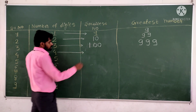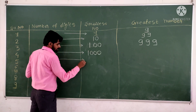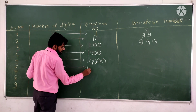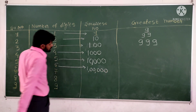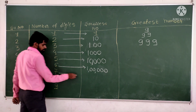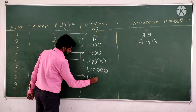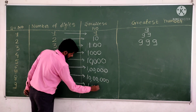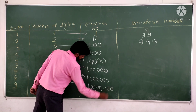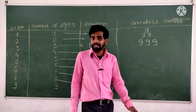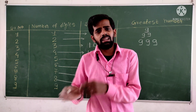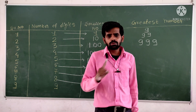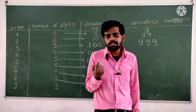So the smallest four digit number is 1,000. The smallest five digit number is 10,000. The smallest six digit number is 1,00,000 — which is one lakh. The smallest seven digit number is ten lakh. The smallest eight digit number is 1,00,00,000. We have already learned numbers up to nine digits in standard fourth. The new topic in this chapter is the international number system.